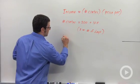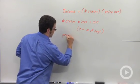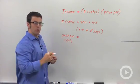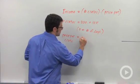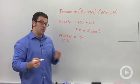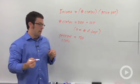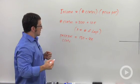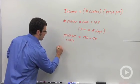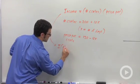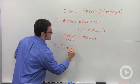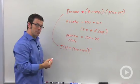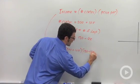The price per crate is also a function of x. The current price is $120, and it drops $4 each day, so minus 4x. That means the income function, I(x), is the number of crates, 200 plus 10x, times the price per crate, 120 minus 4x.